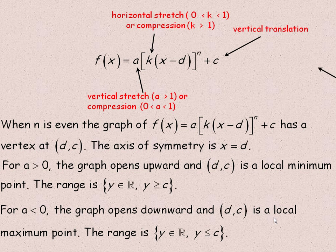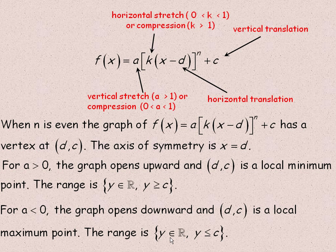If the leading coefficient is negative, the graph opens downward and the point (d, c) is a local maximum. Since it goes down forever from that highest point, there is a highest y value. The range would be all real numbers with the restriction that y is less than or equal to c — whatever that maximum y value is.